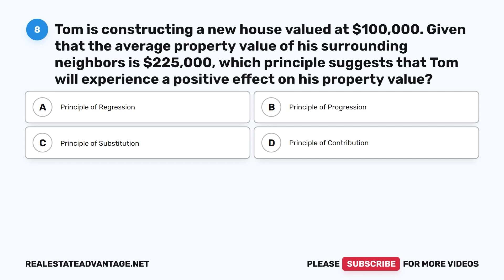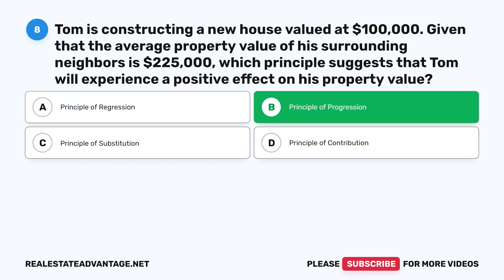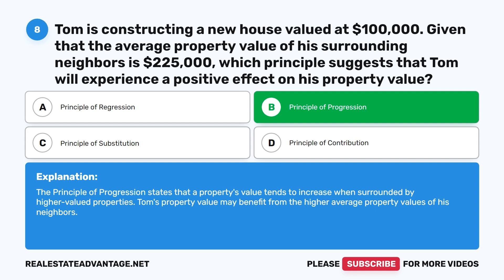Question 8: Tom is constructing a new house valued at $100,000. Given that the average property value of his surrounding neighbors is $225,000, which principle suggests that Tom will experience a positive effect on his property value? A. Principle of regression. B. Principle of progression. C. Principle of substitution. D. Principle of contribution. The correct answer is B: Principle of progression. The principle of progression states that a property's value tends to increase when surrounded by higher-valued properties.